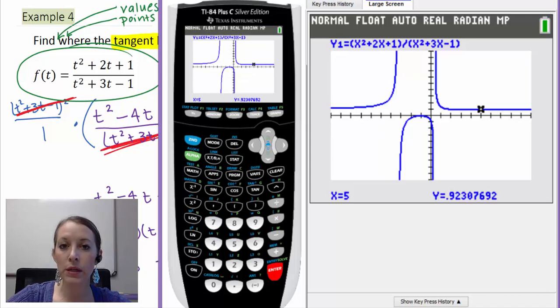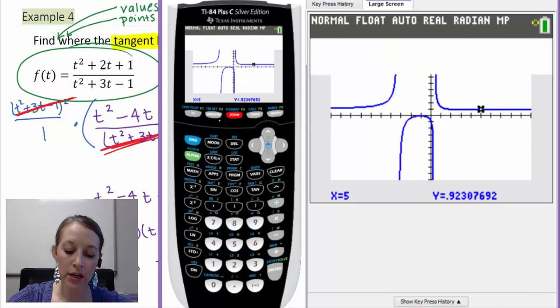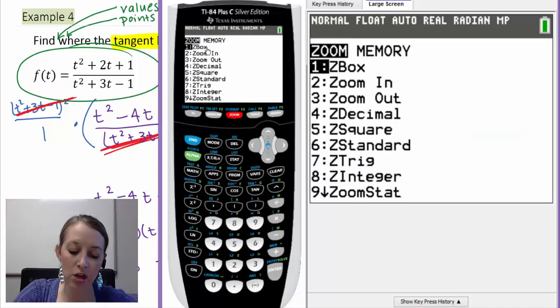So what we need to do is we need to adjust our window around that point so we visually see that we actually have a maximum or, in this case, a low point, a minimum. We can do that manually or let me try and use a different feature on my calculator called Zoom Box. So if we push the Zoom button, we see option number one is Zoom Box.